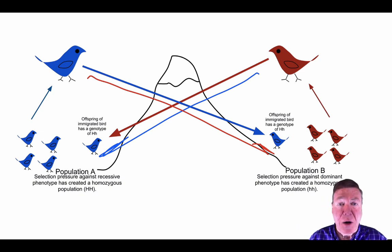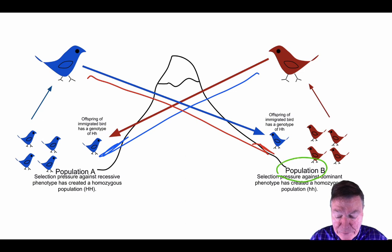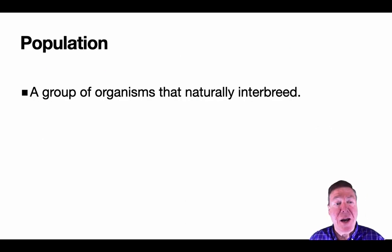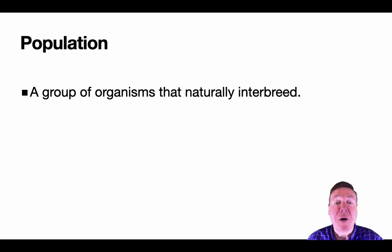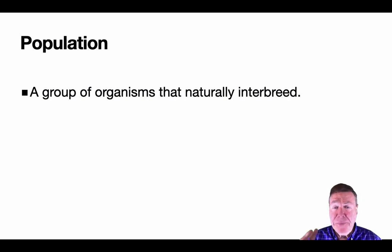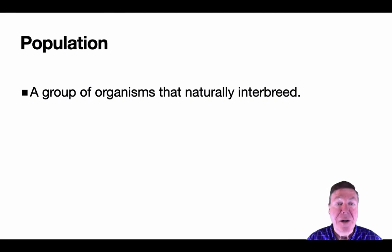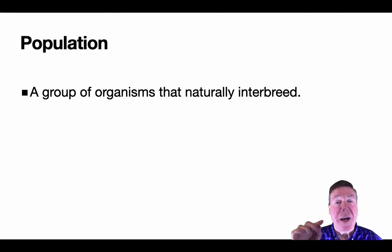That brings us to the next question: what is a population? A population is a group of organisms that naturally interbreed. It could be a species, or it could just be determined by location — but a group of organisms that naturally interbreed is a population.